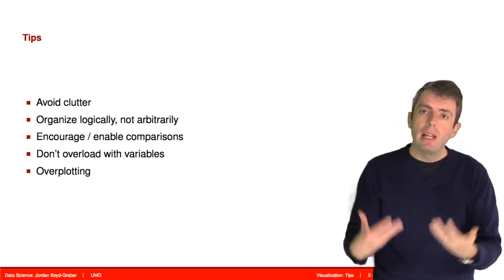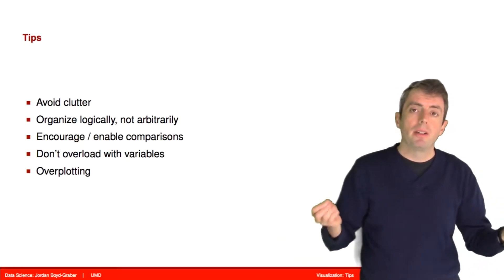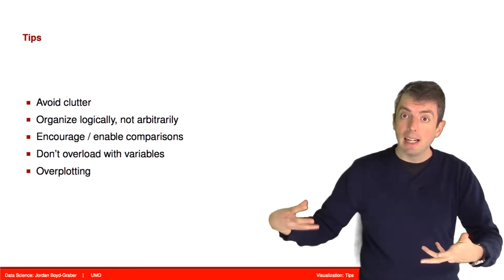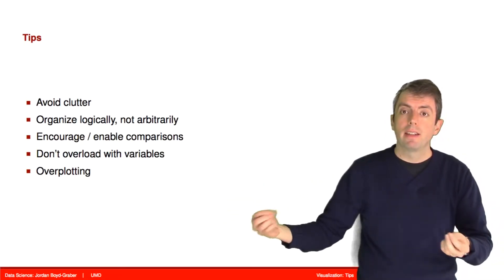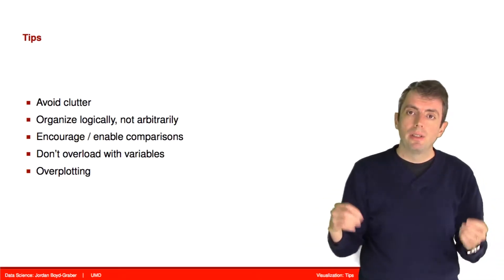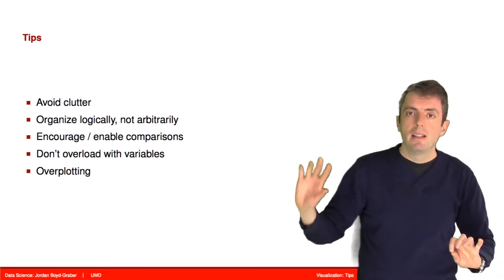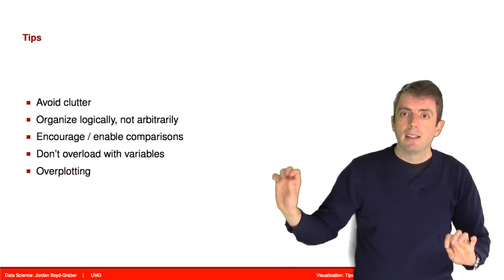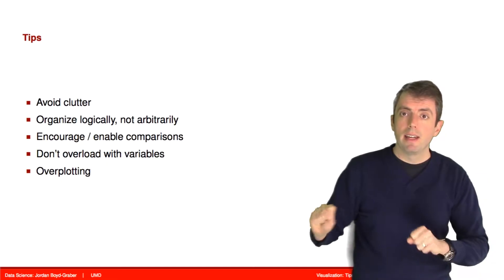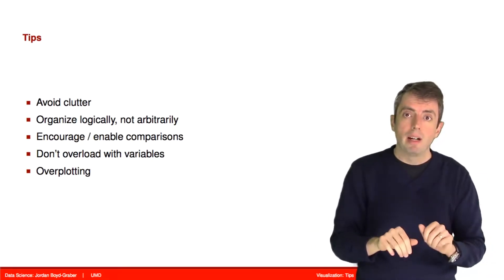Make sure that you enable the reader to make comparisons. Your reader will want to know the difference between A and B, so be able to highlight the different things they should be comparing. Use different shapes, different colors, different lines — all of these things together to make sure that the reader can make comparisons between various things they may want to compare.